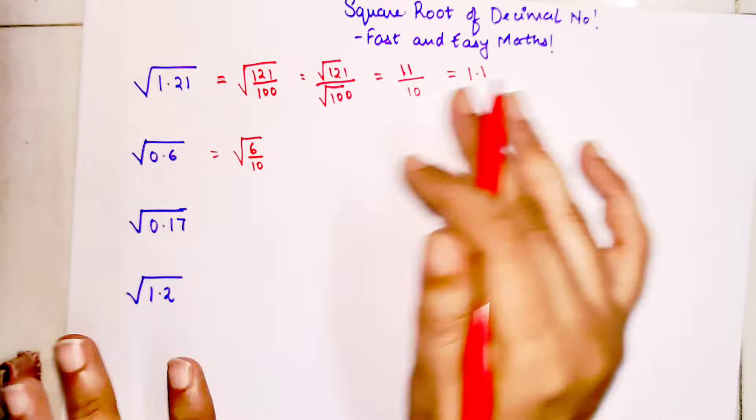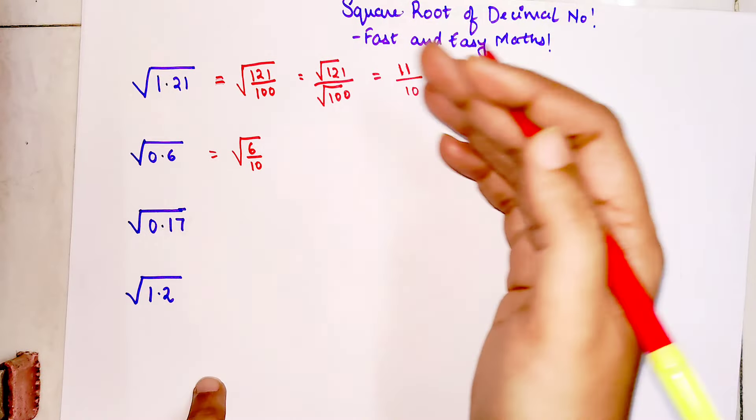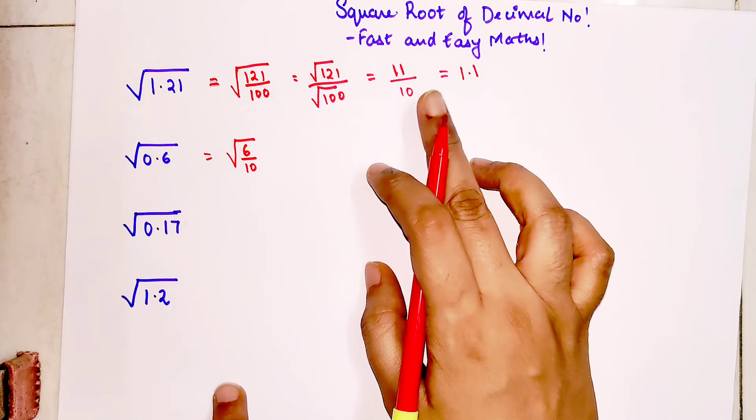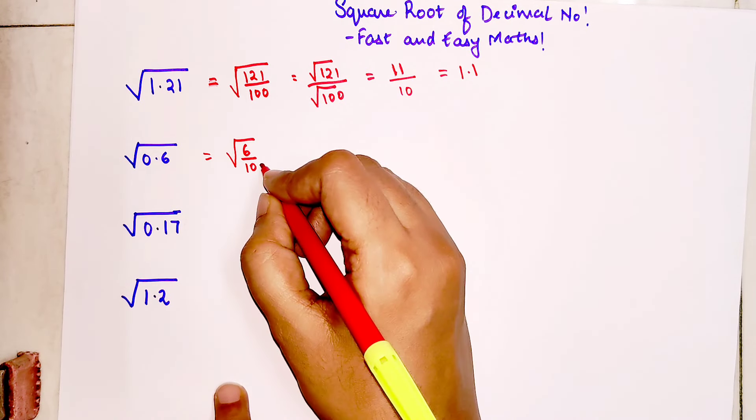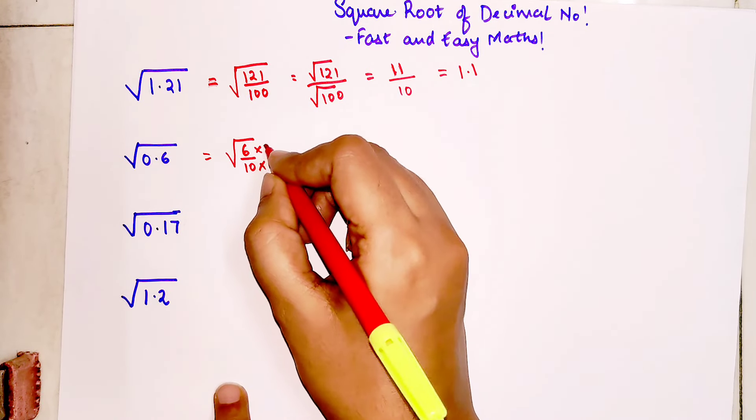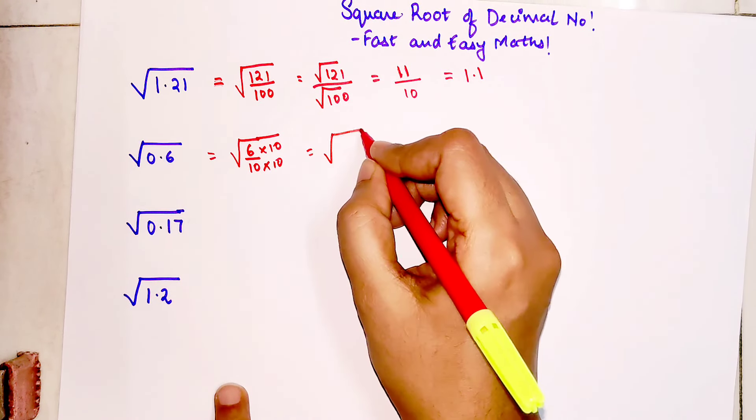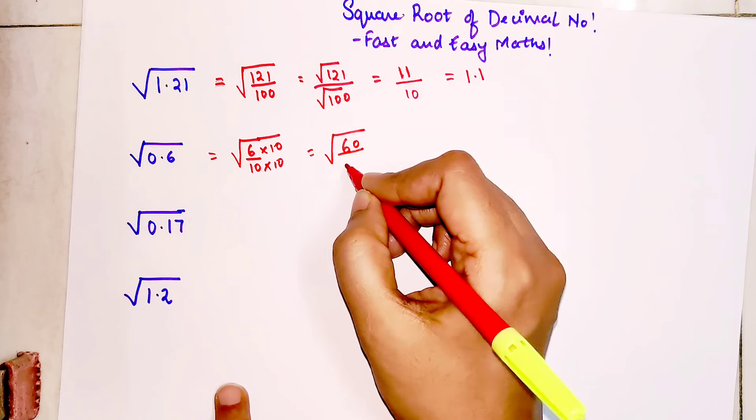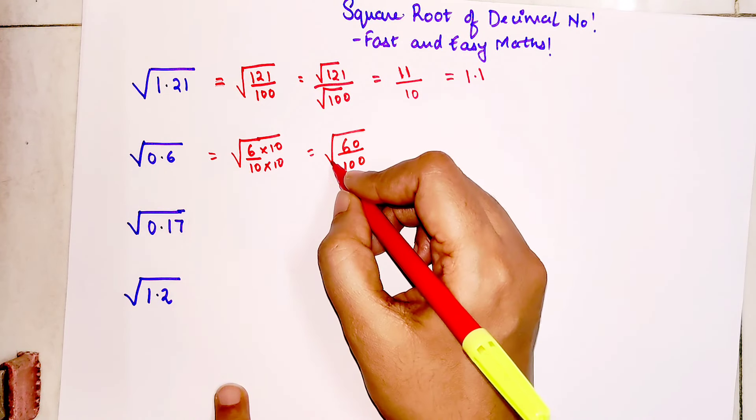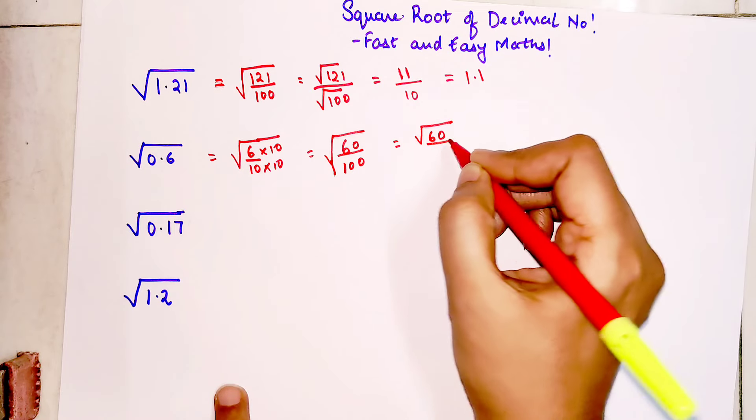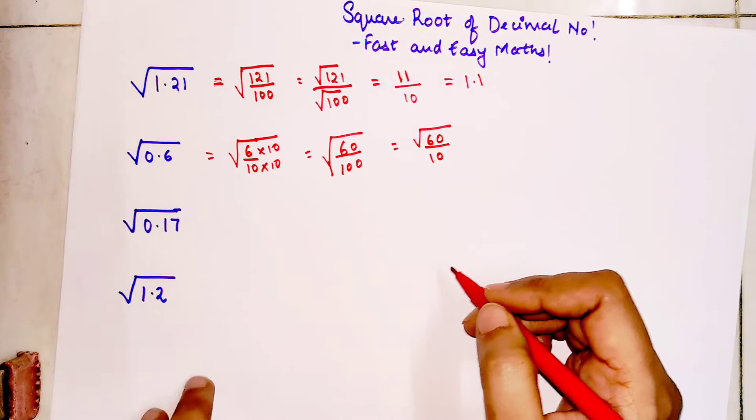Because square root of 100 we know is very easy, and dividing any number by 10 is much easier. So here I will multiply by 10 and here I'll also multiply by 10. So this is basically now 60 upon √100. So now we know we just have to find √60 upon 10.